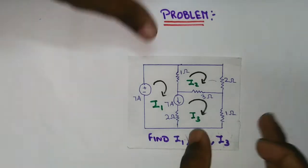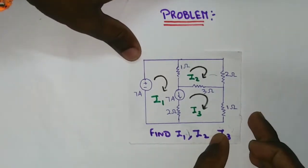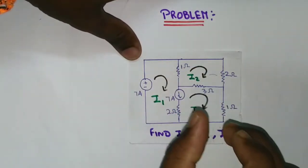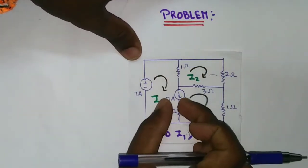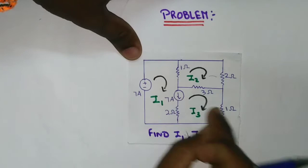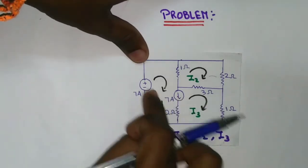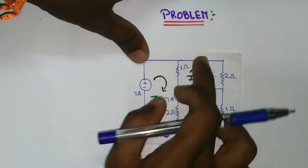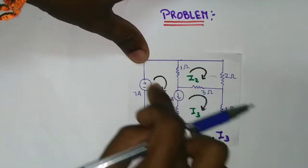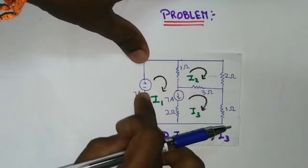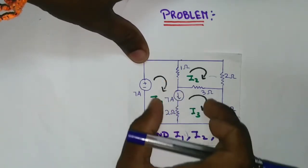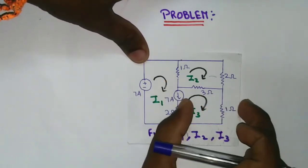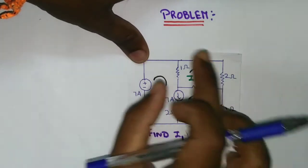Let's talk about the first super mesh. There is a current source. The current source is I1 and I3. There are three loops, but I1 and I3 are also common. So I am talking about the mesh — unless it is complicated — we will talk about the super mesh.